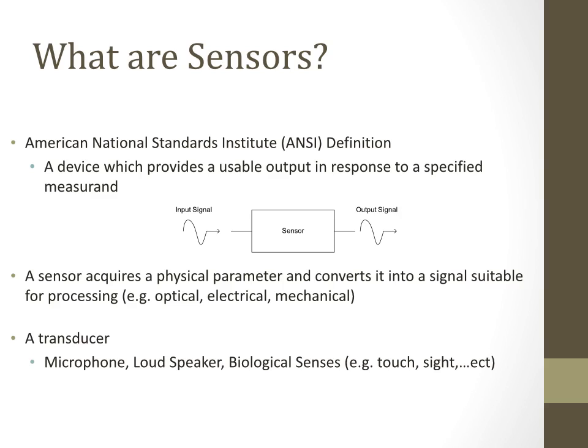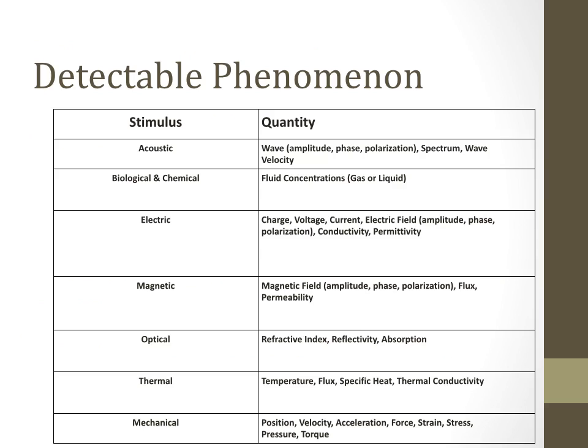A transducer converts one form of energy to another. Examples include a microphone, which converts audio signals into electrical signals, and a loudspeaker, which converts electrical signals back into audio signals. Similarly, a touch phone converts a touch into an electrical signal to open the desired application. These are all examples of sensors and transducers.